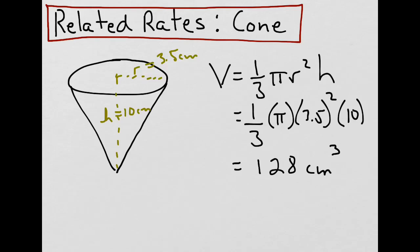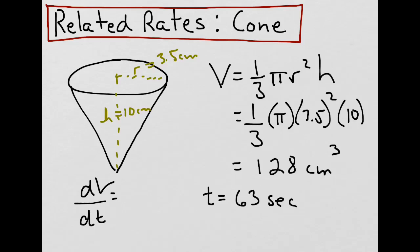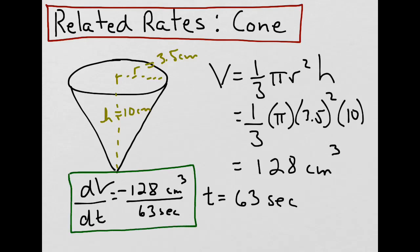Let's say we cut a little hole at the bottom of the cone and measure how long it takes for the water to drain out, and that value was 63 seconds. That tells us that the change in volume with respect to time is equal to 128 cm³ divided by 63 seconds. Because the water is draining out, that becomes a negative value. This value represents the rate at which water is draining from the cone.